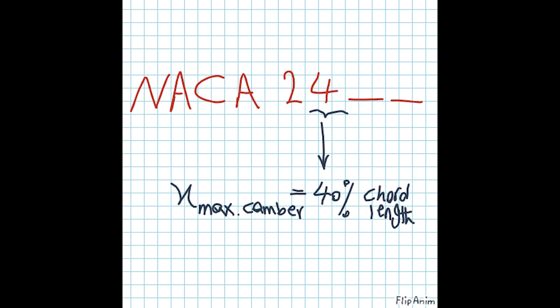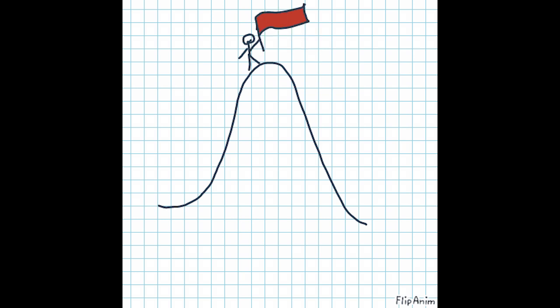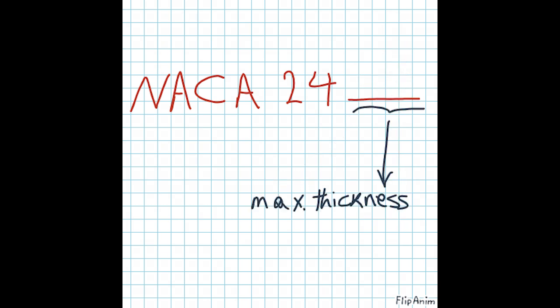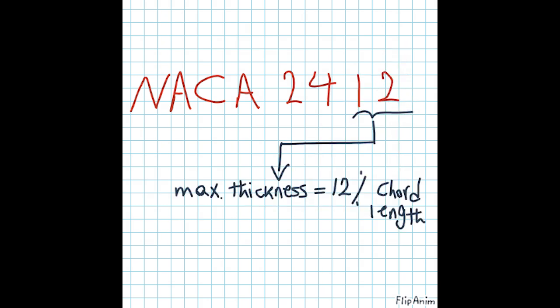Let's look at the last two digits. These digits together describe the maximum thickness of the airfoil as a percentage of the chord length. For example, the last two digits 12 mean the maximum thickness of the airfoil is 12% of the chord length.